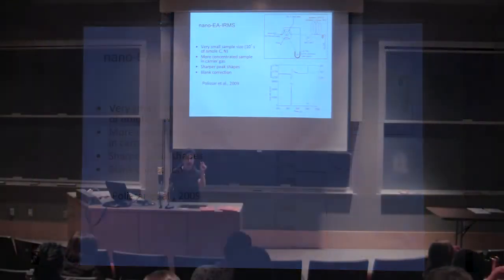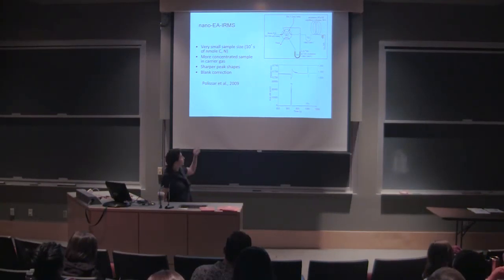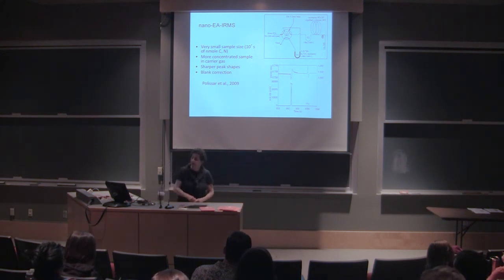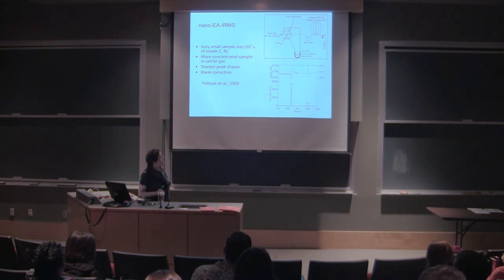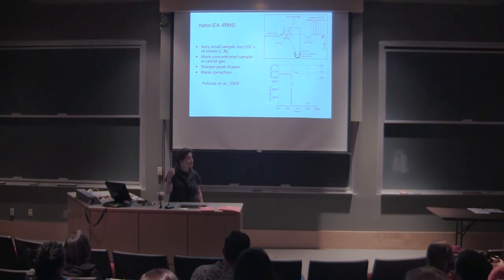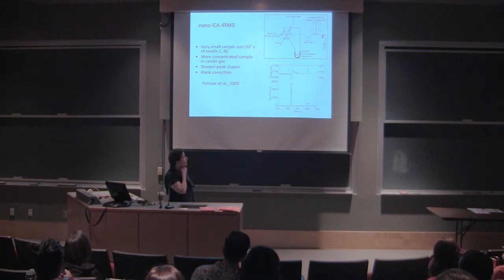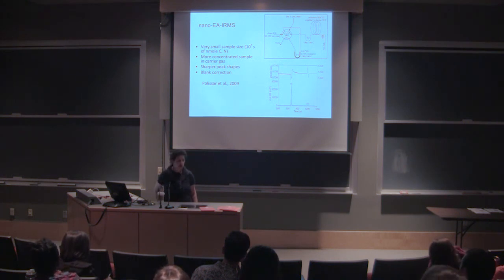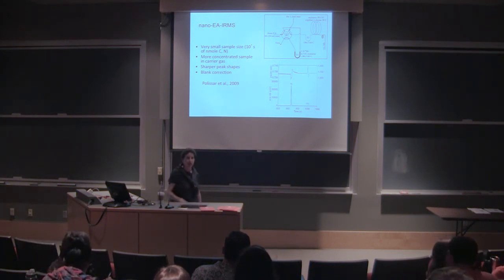We are currently partnering with Thermo on incorporating this nano-EA design into their commercial product, because the field has now swung back the other way and people want to run small samples. The kinds of small samples we like to run are compounds isolated by HPLC methods — for example, chlorophylls and pigments isolated individually by HPLC, then packaged and sent into our EA system. We've also looked at intact polar lipids and, most recently, a coenzyme in archaea called F430, which we can isolate by LC methods and run on this system.